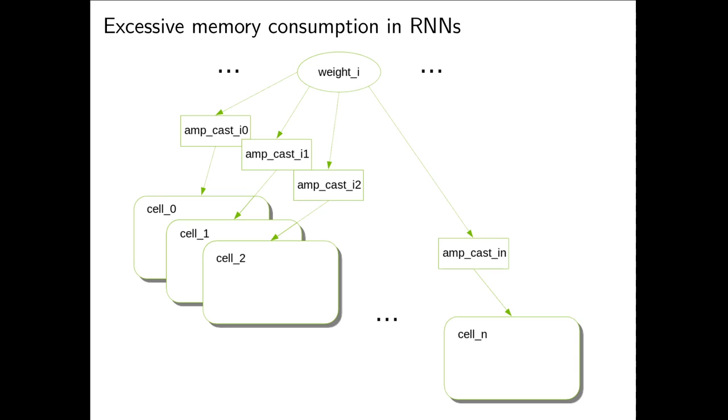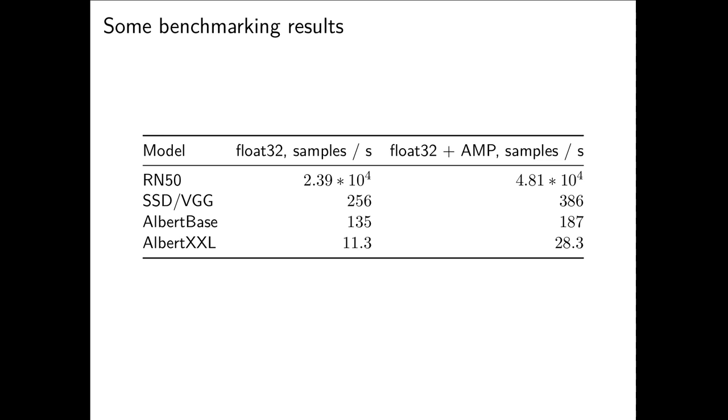But enough of bad things. Let's talk about something good, and the goal of course is performance, because the whole point of using AMP is to make our model train faster. Those are just some benchmarking I've done lately. The absolute values are probably meaningless. I just want to compare in pairs numbers with AMP and without AMP. Those are numbers that's likely that you also like to encounter when you start to use AMP.